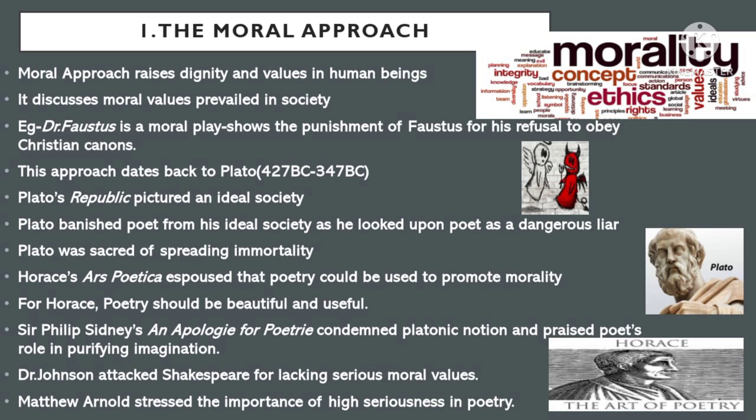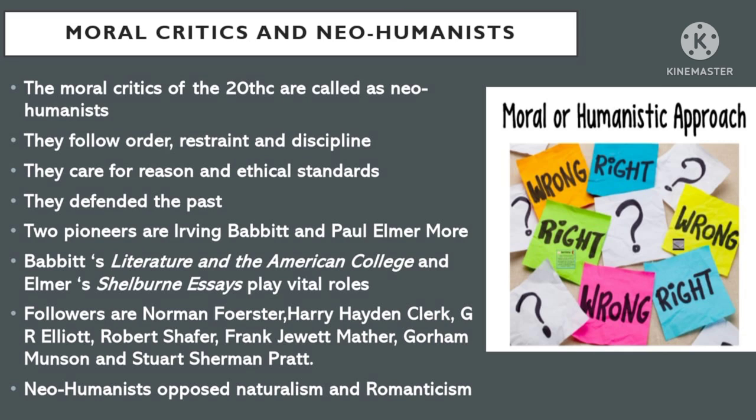Matthew Arnold, an eminent poet-critic of the Victorian age, stated that great poetry should be marked by high seriousness. Thus, Arnold gives importance to content over form. The moral critics of the 20th century are called neo-humanists. Their watchwords are order, restraint, and discipline. The neo-humanist critics care for reason and ethical standards and defend the past. The two neo-humanists who played a pioneering role are Irving Babbitt and Paul Elmer More. Irving Babbitt was the author of Literature and the American College, and Paul Elmer More wrote Shelburne Essays.